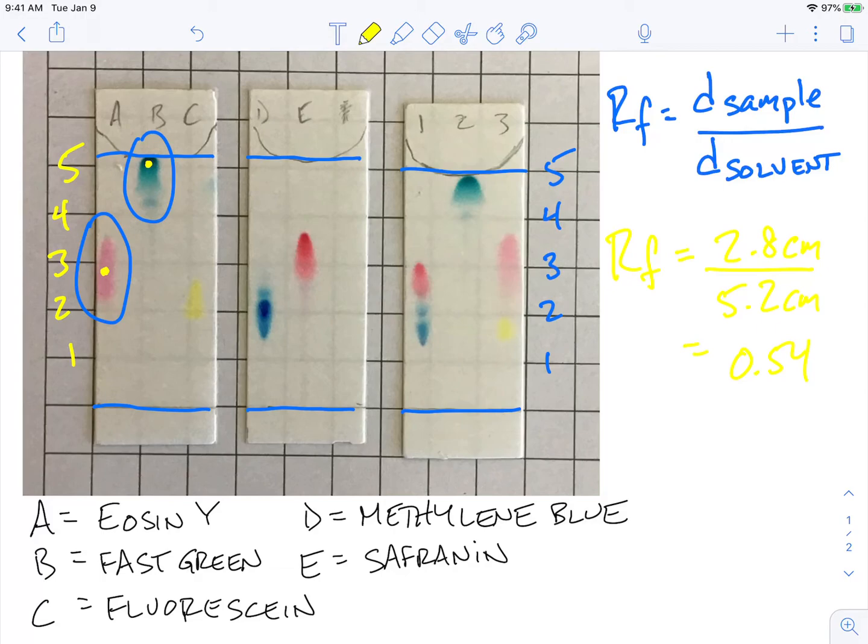And so there are no units with the RF value, but we would use that to numerically compare to our unknowns and say, do we think that Eosin Y is in any of our unknown values? And so we would want to do that.